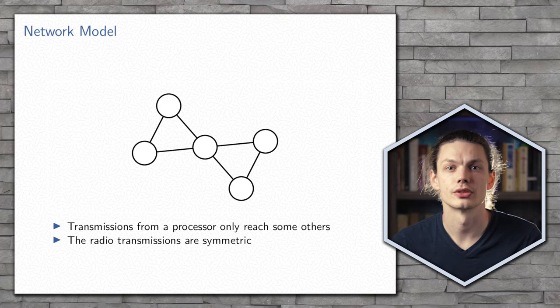We also assume that the transmissions are symmetric, so when U can transmit a message to V, V can also transmit a message back to U.